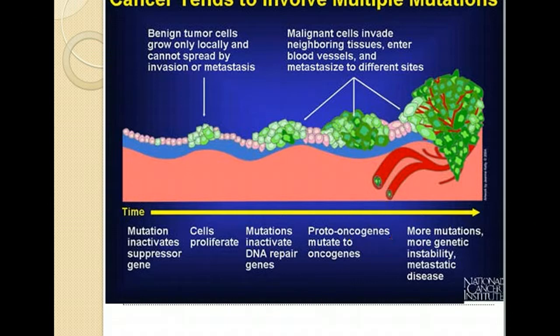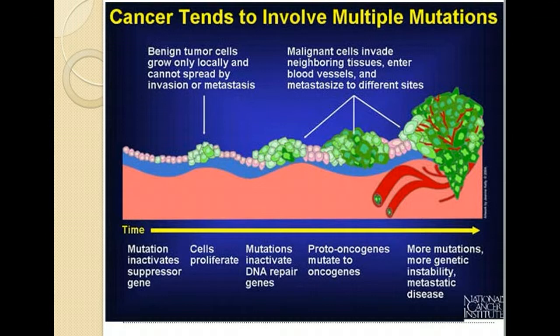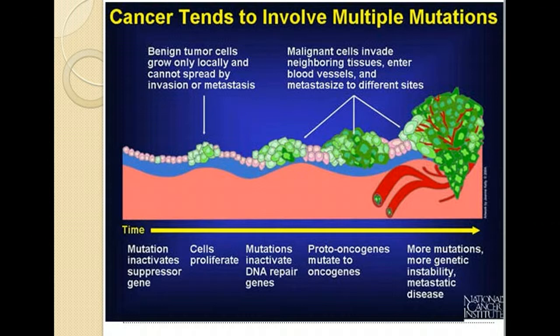Cancer tends to involve mutations. A mutation inactivates genes — genes are either turned on or off — and interestingly, this switching is often driven by behavioral or environmental factors, which we'll discuss in the risk factors. The cancer starts off very small and localized, then once cells begin invading tissues they can start to spread. In the last stage, cells get into the bloodstream and the patient ends up with metastatic disease.